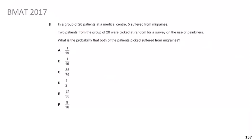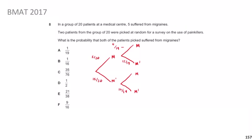Again there are two events: picking the first patient and picking the second. On the first pick, P(migraine) = 5/20 and P(no migraine) = 15/20. For the second pick you're out of 19. If the first person had a migraine, there are four migraine patients left, so P(migraine second | migraine first) = 4/19, and P(no migraine) = 15/19.